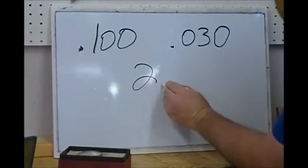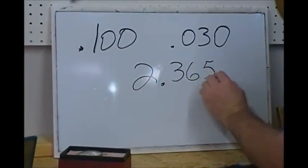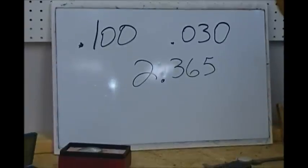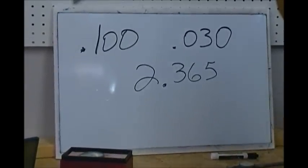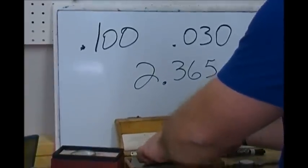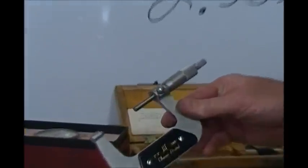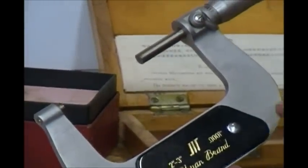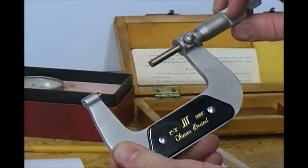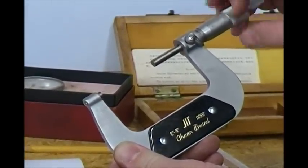Two inches, three hundred sixty-five thousandths — that's the way we write and read that measurement. We also have what we call a micrometer. Micrometers come in all different sizes; this is a two-to-three inch micrometer, which means it will measure things that are between two and three inches, and it will measure within a thousandth of an inch.